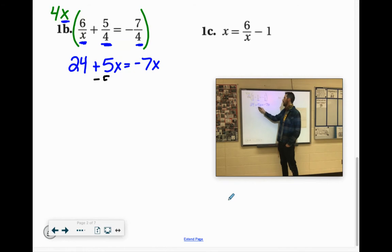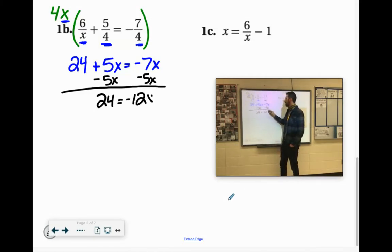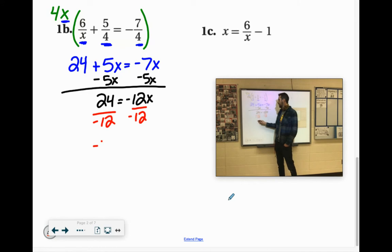So we can subtract 5x's from both sides. 24 equals negative 12x. Divide that by negative 12. 24 divided by negative 12 is negative 2.